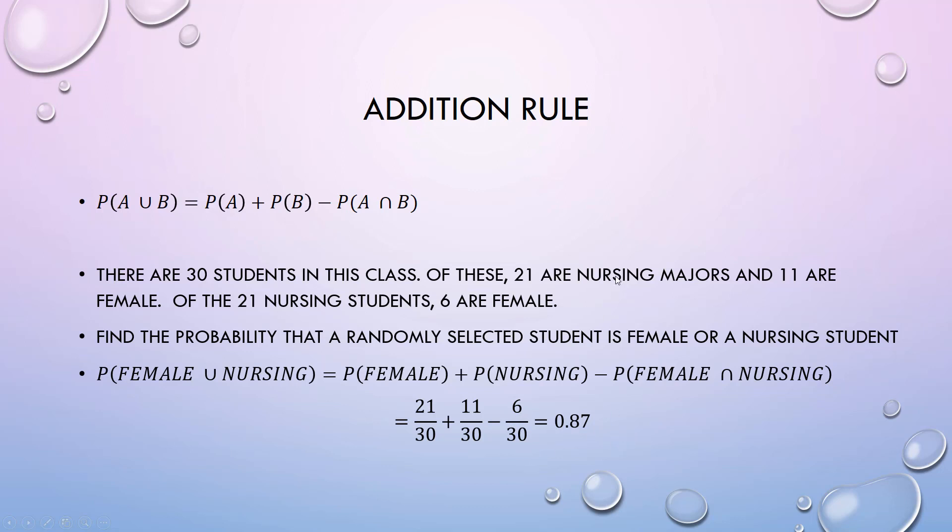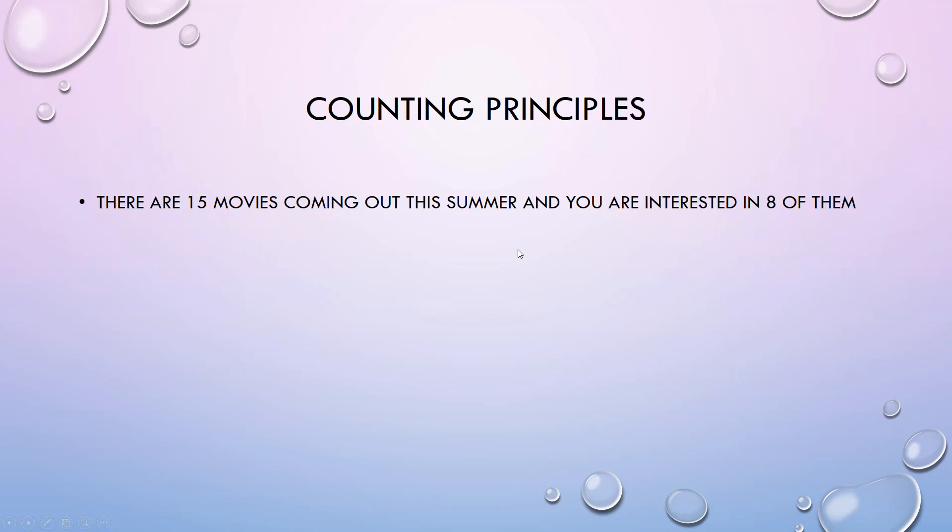Counting principles: if we want to be able to do like combinations to find the number of ways something can occur and then use it as a probability. There are 15 movies coming out this summer and you're interested in eight of them.